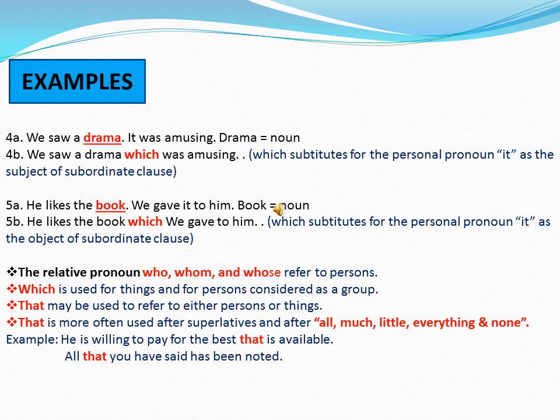Sentence 5A: 'He likes the book. We gave it to him.' In this sentence, 'book' is a noun. The Relative Pronoun used for 'book' is 'which.' The combined sentence becomes: 'He likes the book which we gave to him.' Here, 'which' substitutes for the personal pronoun 'it' as the object of the subordinate clause. So 'which' can be used both as a subject and as an object.